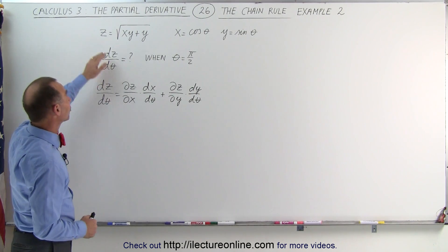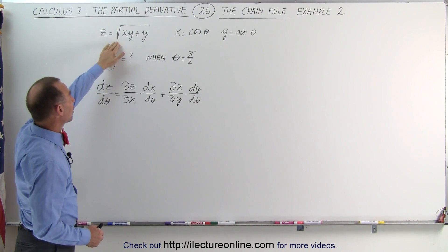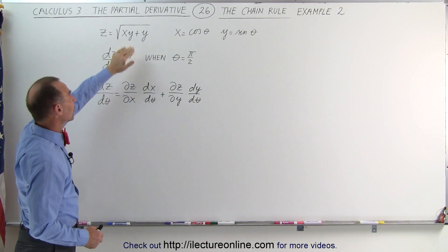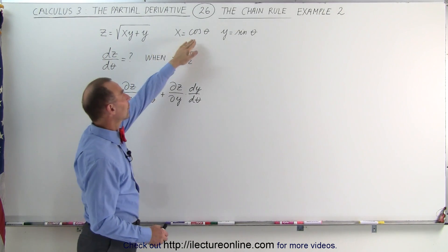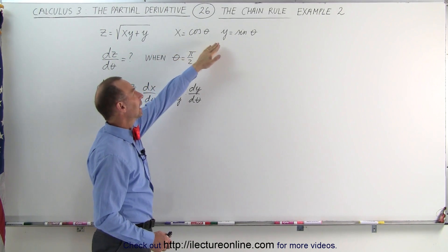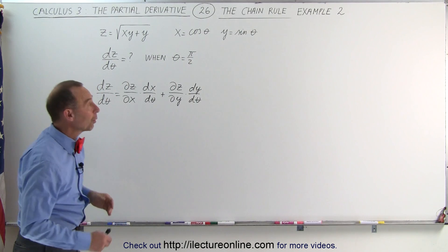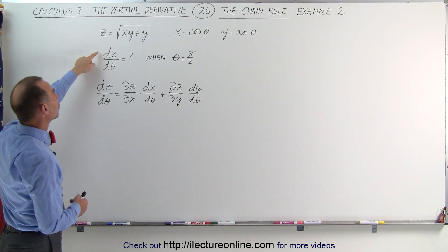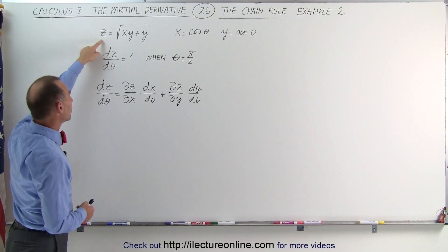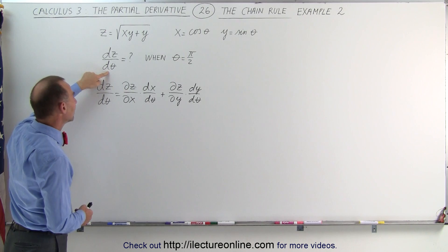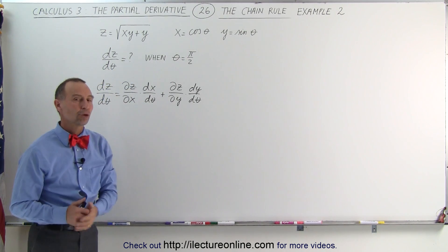Our original function z is a function of x and y — it's the square root of x·y plus y — and x is a function of theta and y is a function of theta. What we're trying to do is find the derivative of the function z with respect to theta when theta equals pi over 2.